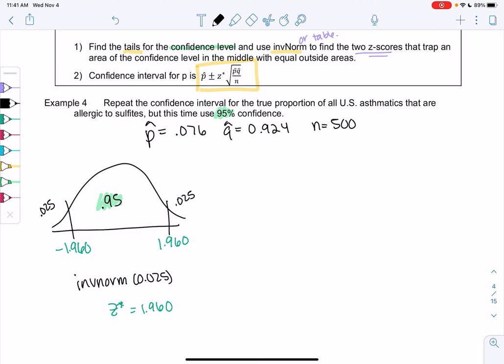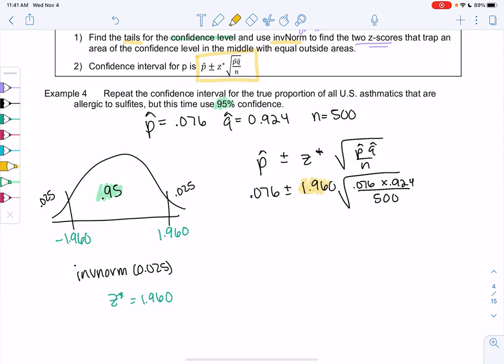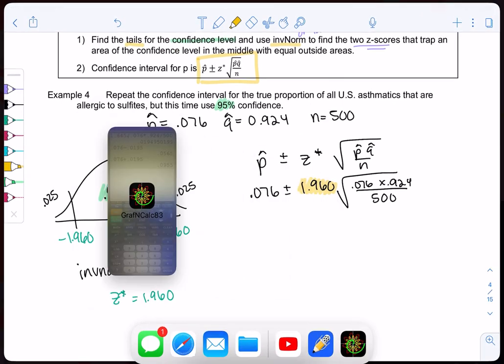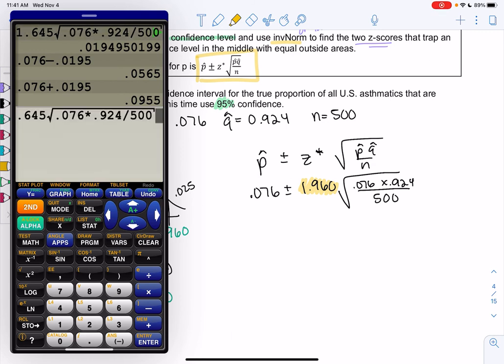So let's go ahead and plug in. So p hat, 0.076 plus or minus, my z star is 1.960, and then square root of p hat, q hat, over n. So square root of 0.076 times 0.924, all over 500. So you'll notice the formula looks the same. We've just changed the z score.